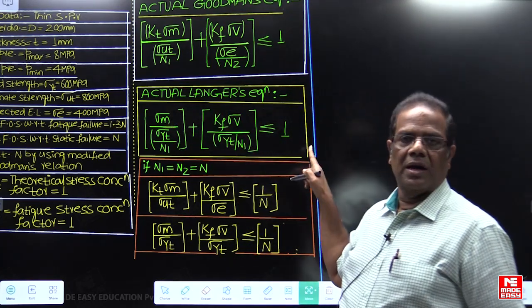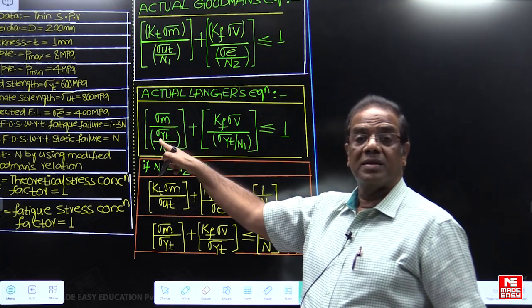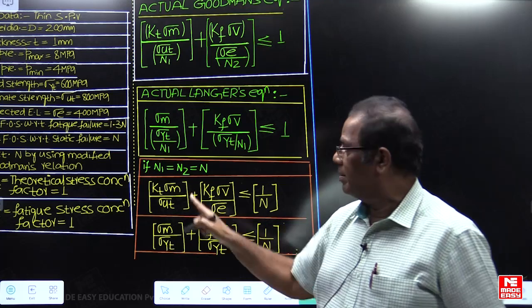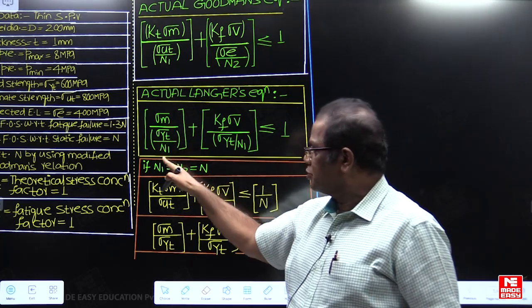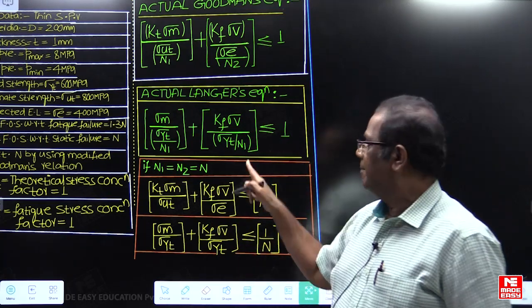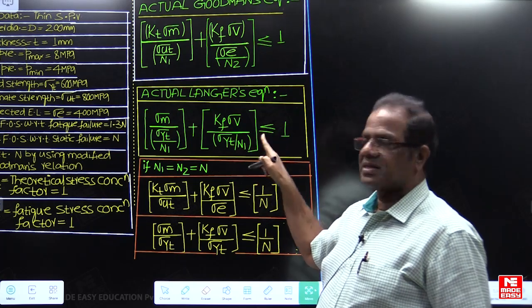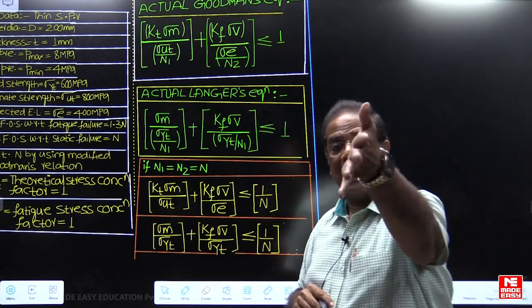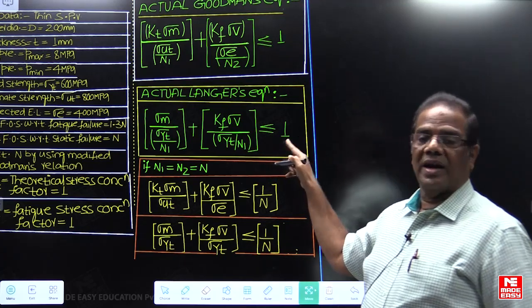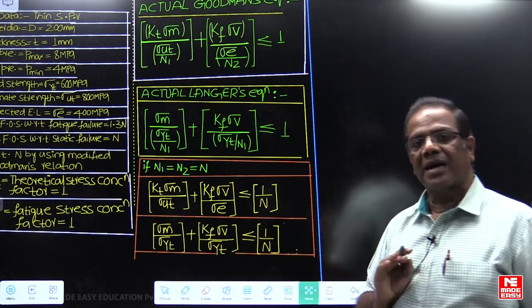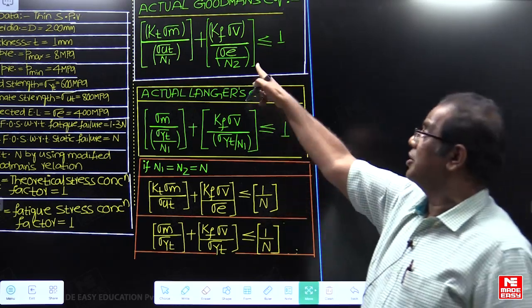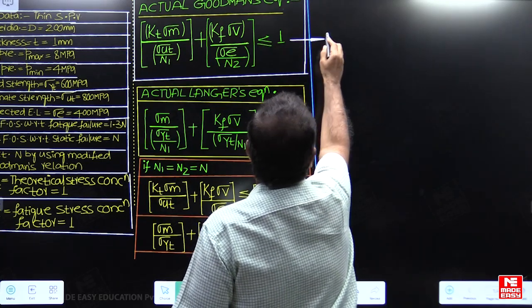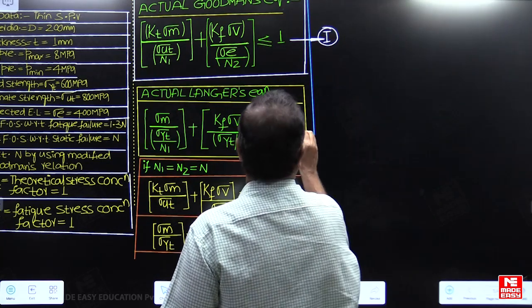Langer's equation is: sigma_M / (sigma_YT / N1) + K_F·sigma_V / (sigma_YT / N1) = 1, where sigma_YT is the failure stress for ductile material under static loading. To get the permissible stress under static loading you divide by N1. Once again, if N1 values are equal in both terms, the standard simplified form applies. This is the Langer's equation to use.